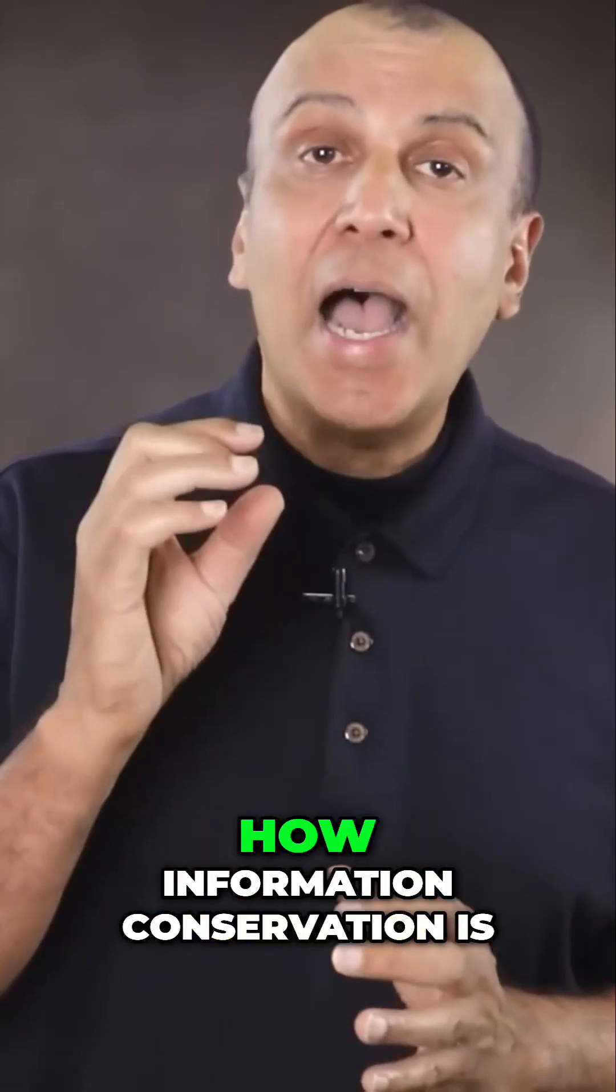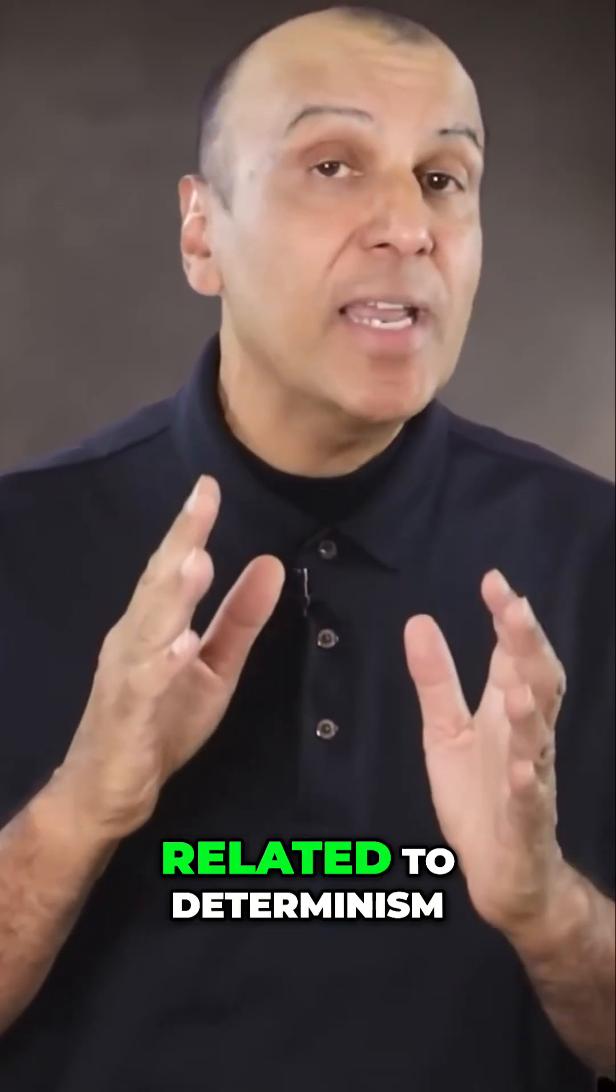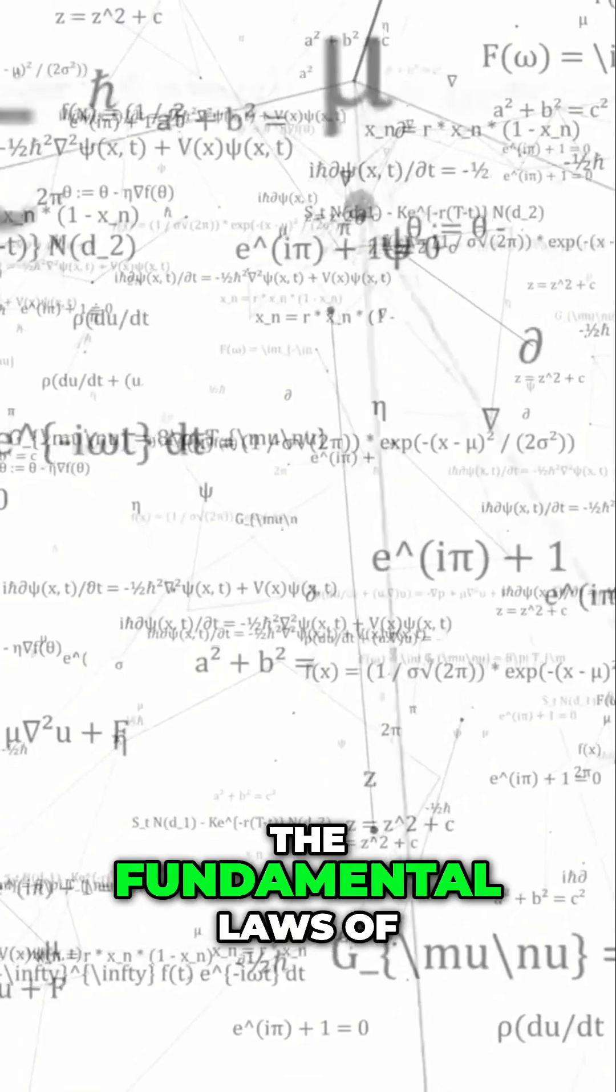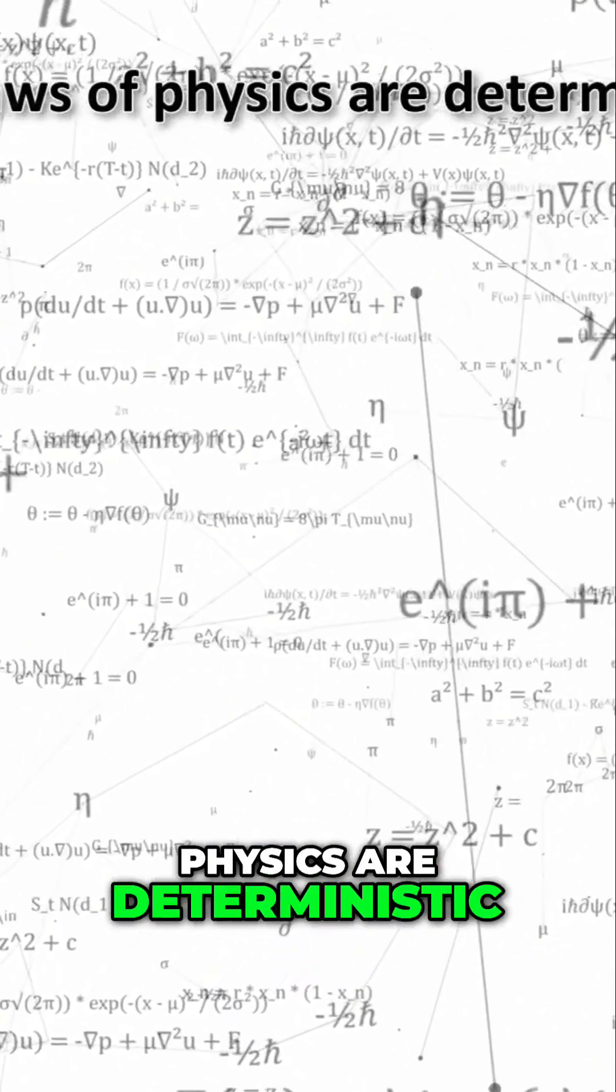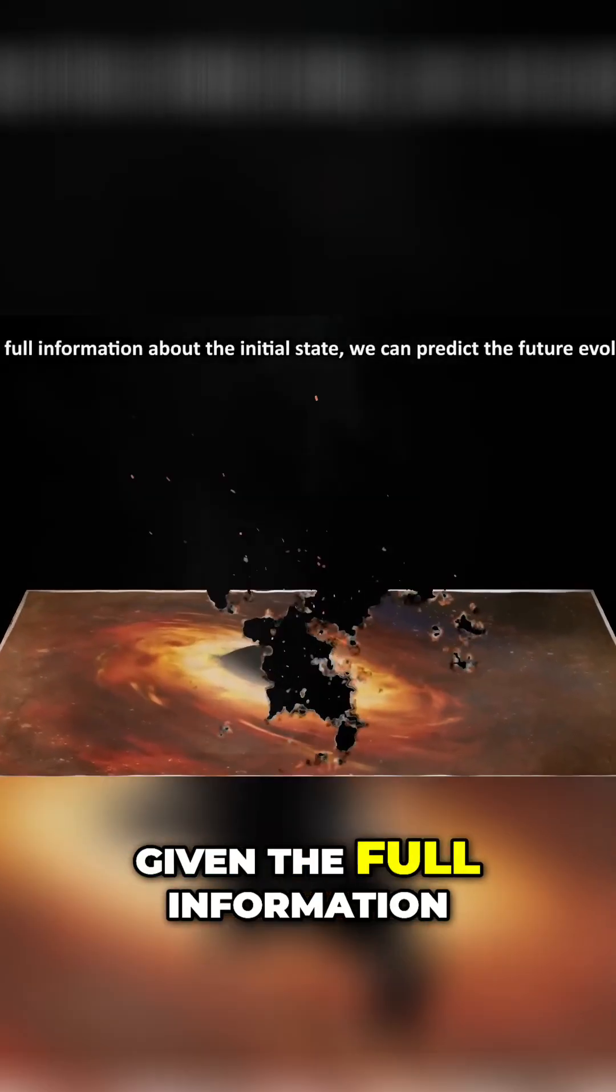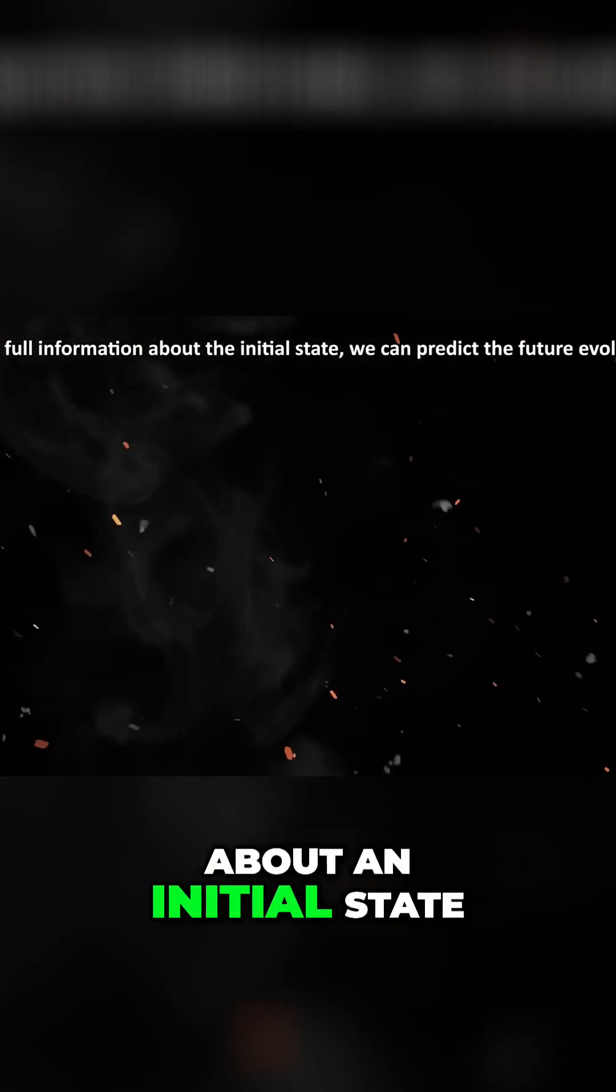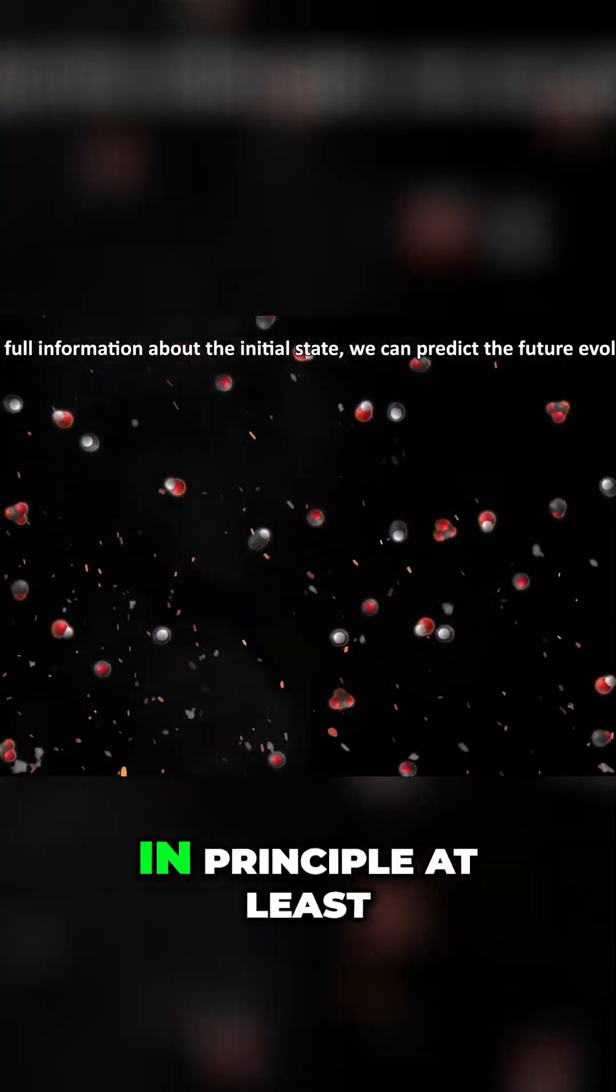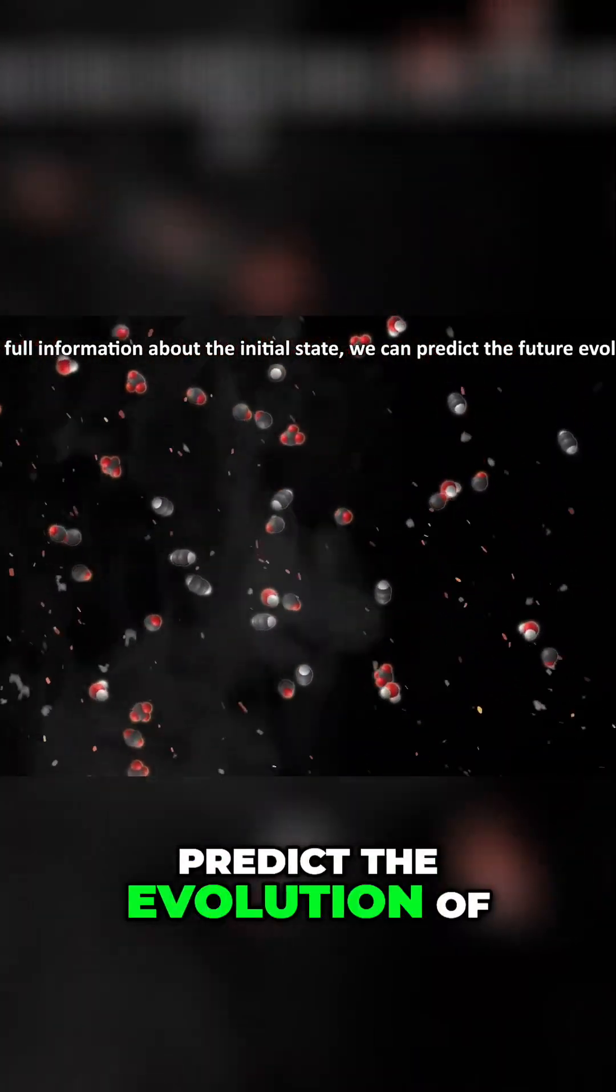And now let's answer the question, how information conservation is related to determinism. The fundamental laws of physics are deterministic. That is, given the full information about an initial state of a system, you can, in principle at least, predict the evolution of that system.